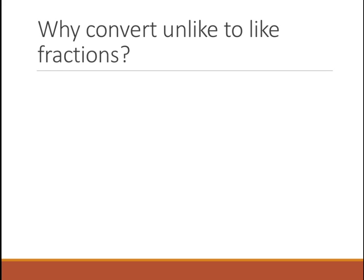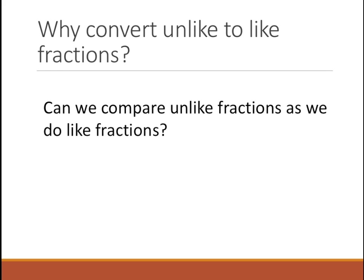Now why do we need to convert these unlike fractions to like fractions? Let's look at comparing unlike fractions. Can we do it the same way as with like fractions? We have 2 by 3, which is less than 3 by 5 — that's what we might say, just as with like fractions, because 2 is less than 3. But is that true?